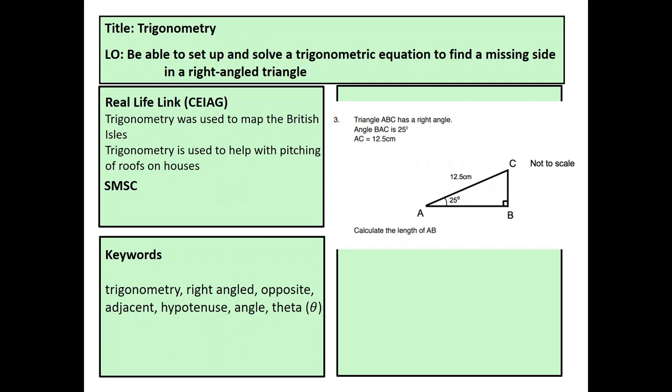Today's topic is trigonometry and we'll be looking at how we can use this to find out missing side lengths in right angle triangles. The keywords here, we'll be looking at them throughout the lesson, but the one that you may not be familiar with is theta. That's just a Greek symbol for missing angles.